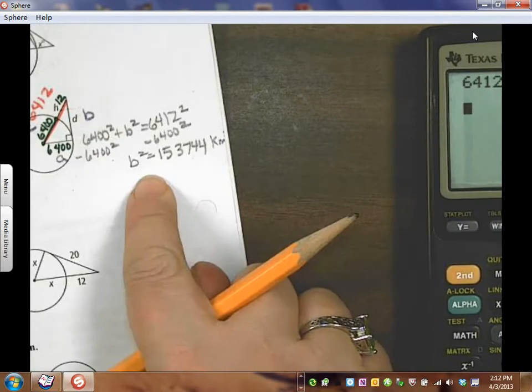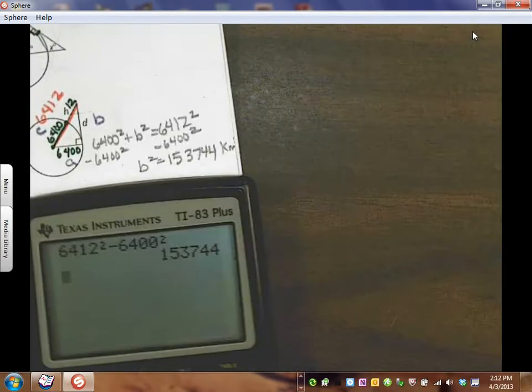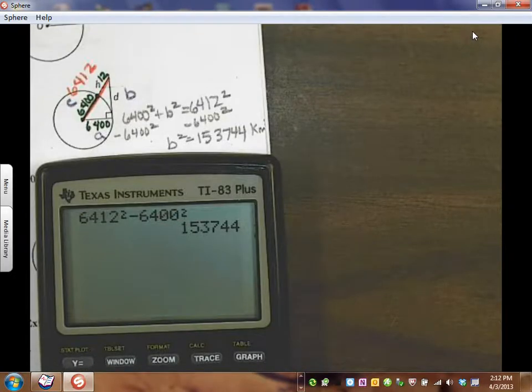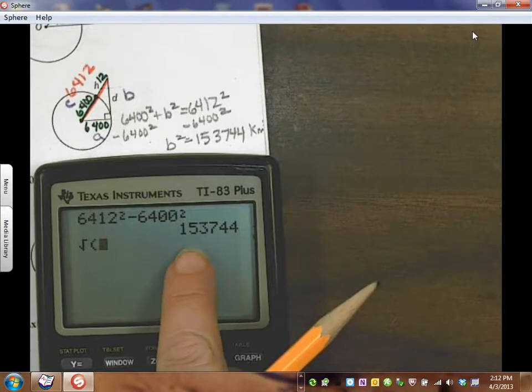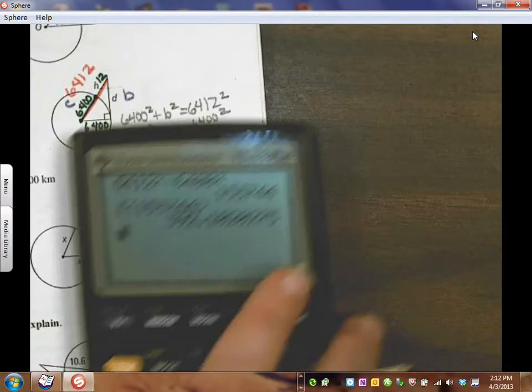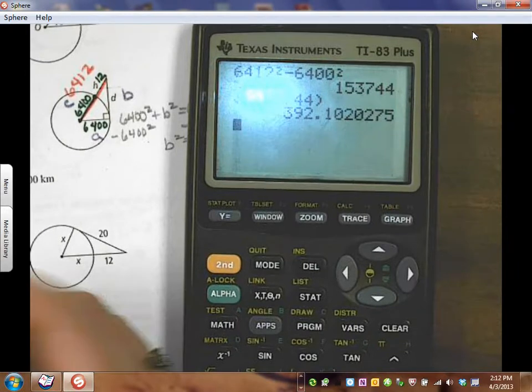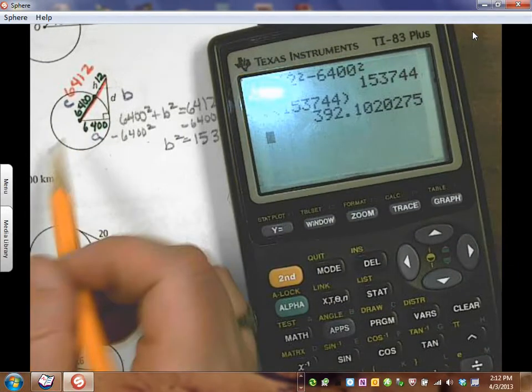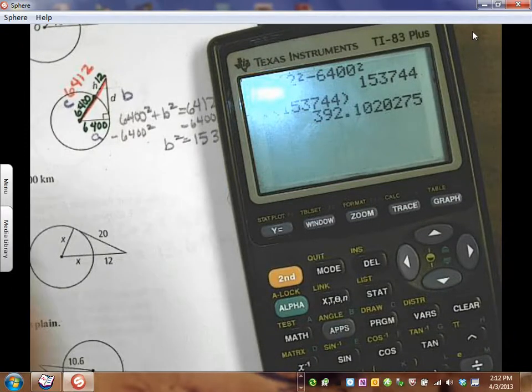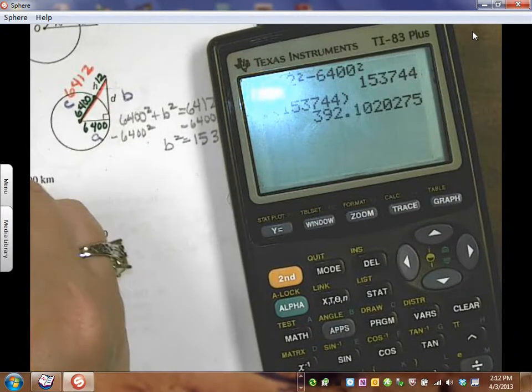So I can do this right in the calculator. Watch how I'm doing it. I'm going to say 6412 squared minus 6400 squared. That's a lot better way to do it than to get those big numbers and write it down. So I know that the difference between those or what B squared is, is 153744. And that's all in kilometers squared. Well, how do I find the square root? I'm going to take the square root of that. So I already have that number in there. I can just hit second and type this exactly in. Close my parentheses, hit enter. So I know the distance it's going to see, this B length, is for me 392.